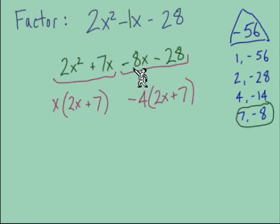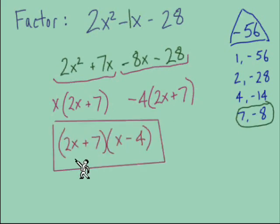From the second pair, we have a GCF of -4. It was necessary to factor out -4 to make sure our terms inside the parentheses become positive to match the first pair. Our quantities in parentheses match: 2x + 7 is one factor in our answer, and the other factor is x - 4.